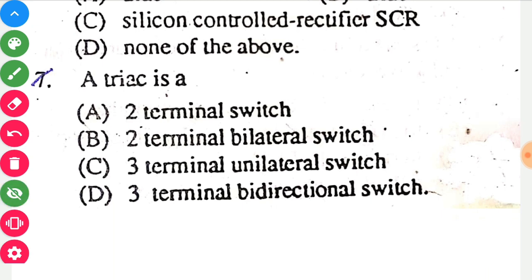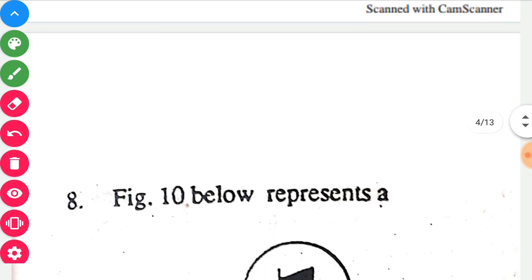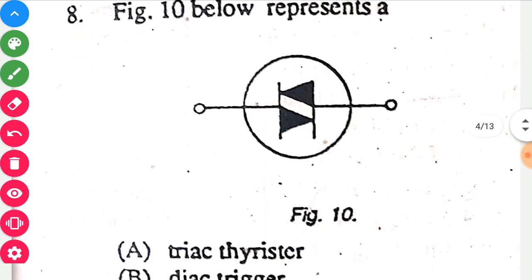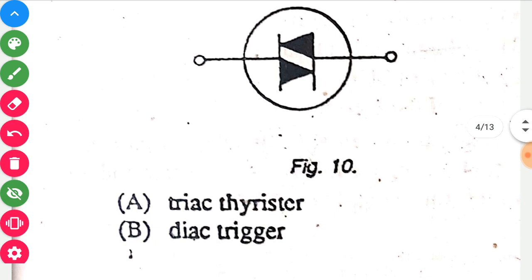Coming towards the next question: a triac is a three terminal bidirectional switch, so option D is the correct option. Figure 10 below represents a triac trigger circuit.